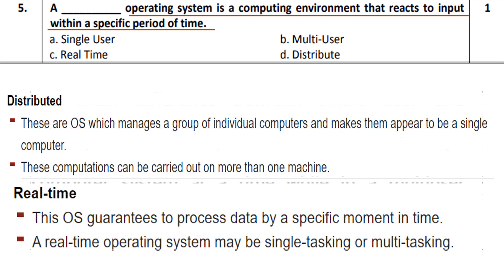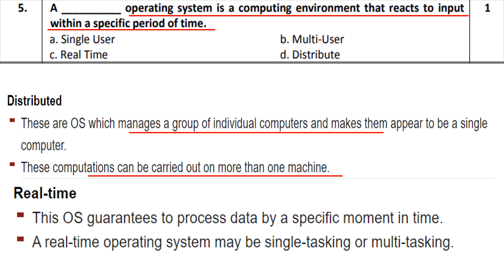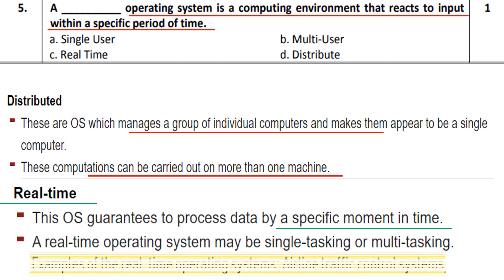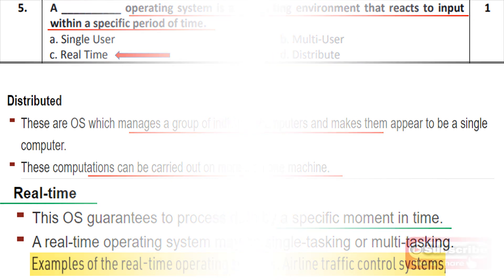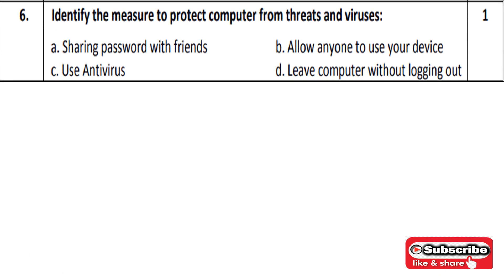A distributed operating system is a multi-user operating system with many computers connected together through networks — it is a group of individual computers used as a single system, like big company networks. A real-time operating system gives a response within a specific amount of time, like an airline traffic control system. So the answer to this question is option number C — the real-time operating system.